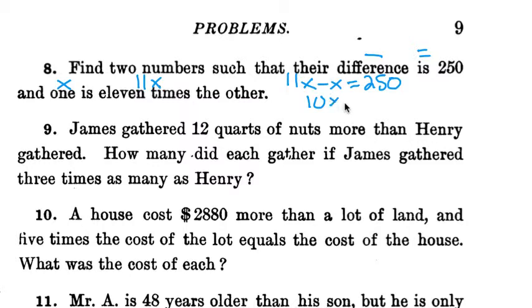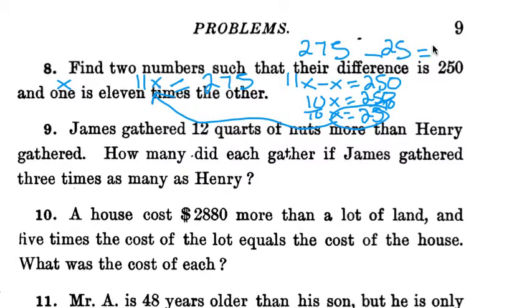Always taking the biggest number in this simple algebra stuff, 11x minus x is equal to 250. 11x minus x is 10x is equal to 250. Divide both sides by 10, we get x equals 25. And now that we know what one of the numbers is, we'll go back and plug it in. We need to find 11 times 25, which equals 275. You can check: 275 minus 25 equals 250, so that gives us our two numbers, 275 and 25.